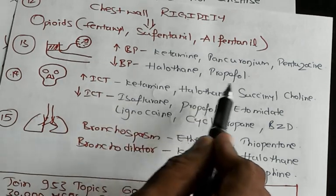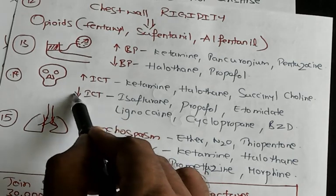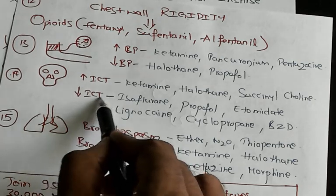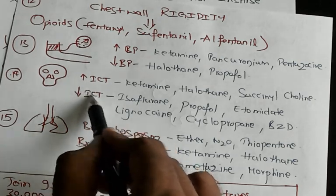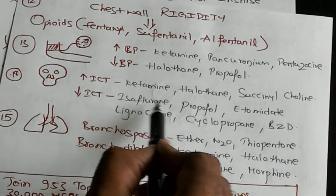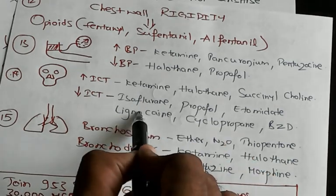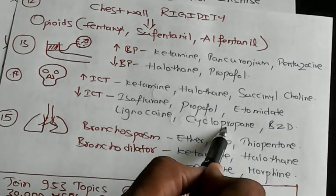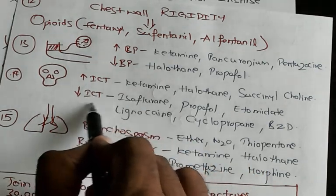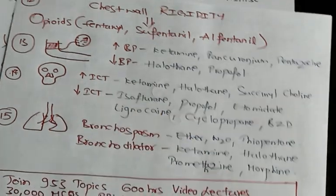For increased ICT: ketamine, halothane, and succinylcholine. For decreased ICT: isoflurane, propofol, etomidate, lignocaine, cyclopropane, and benzodiazepines — they all decrease intracranial tension.